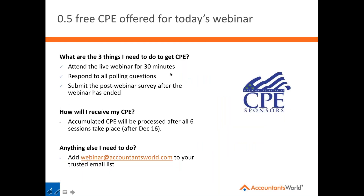We offer half a CP credit for today's webinar. If you attend all five CP sessions in this six-session series, you can earn 2.5 CP. To qualify, you need to attend the live webinar for 30 minutes, respond to both polling questions, and submit the post-webinar survey. CP confirmations will be sent after all sessions conclude after December 16th. Please add webinar@accountantsworld.com to your trusted email list.